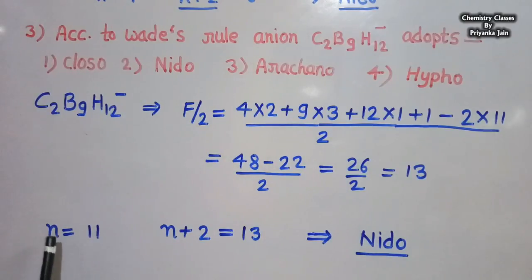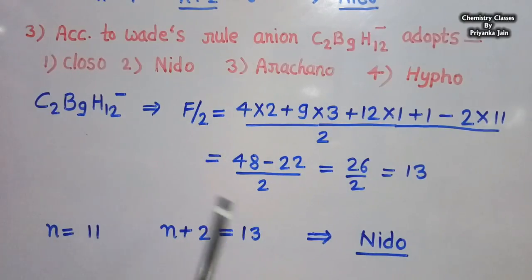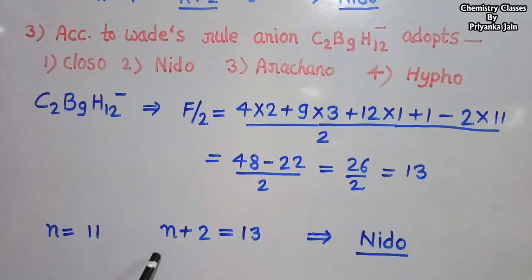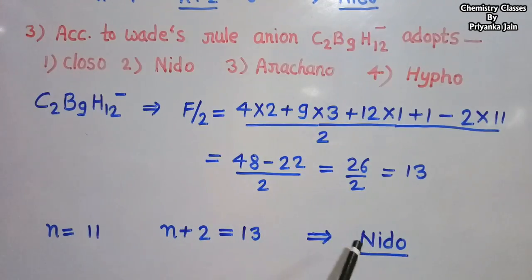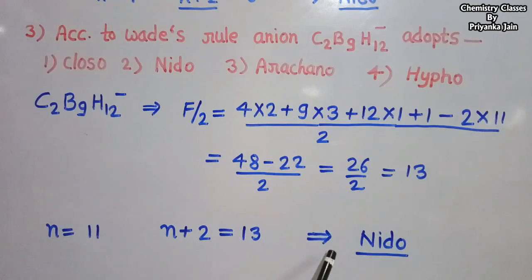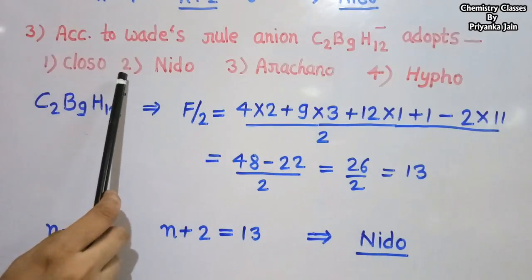The number of vertices is 11, and 13 = n + 2 (where n = 11). This corresponds to the nido family, so C2B9H12⁻ has a nido structure — option 2 is the correct answer.